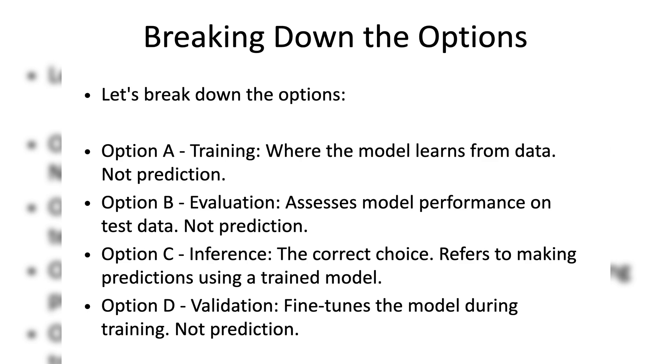After the model has been trained, it uses what it has learned to make predictions on new data. This application of the model to new data is known as inference. Option D: Validation. Validation refers to the process of tuning the model using a validation dataset during training.